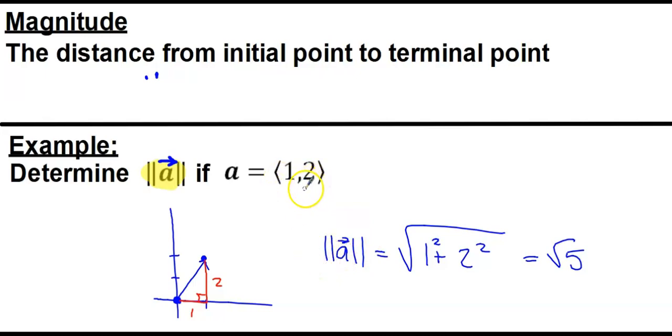This is the same vector as before, a = (1,2), and we want to determine the magnitude of vector a. The magnitude of the vector is just the length of the vector. We said it goes over one unit for the x change and up two units for the y change.